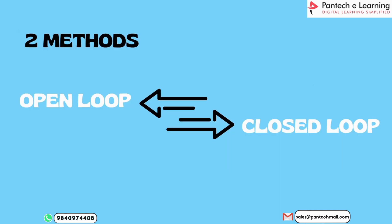In the Zeta Converter, we have an open loop and closed loop method. In open loop, the control of the converter switching elements — MOSFETs or a transistor or a normal switch — is not based on feedback from the output. Instead, it operates in a feed-forward manner, where the duty cycle of the switching signal is set based on the desired output voltage and the input voltage.